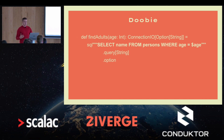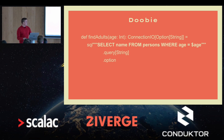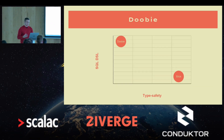Doobie takes the opposite approach, at least when it comes to writing queries. Doobie doesn't abstract over SQL at all — it lets you write SQL as raw strings. While Doobie offers some runtime query validation and many people enjoy it especially if they're familiar with SQL, raw strings are simply not typesafe, so Doobie sits lower on the type safety axis.